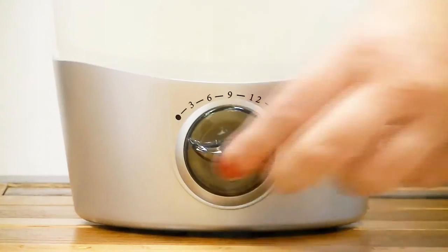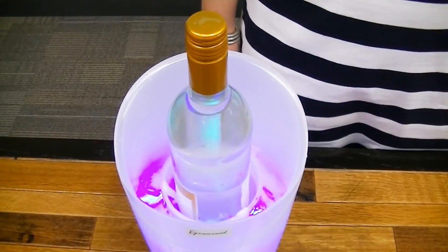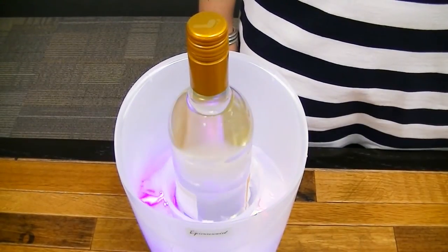To set the unit, simply turn the timer clockwise to the desired position and watch while your favorite bottle is illuminated, rotating 360 degrees to an optimal and even temperature for consumption.